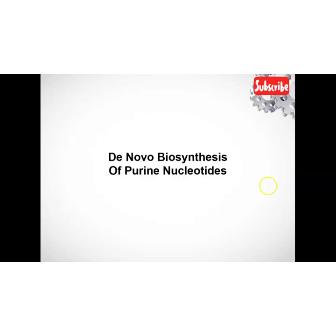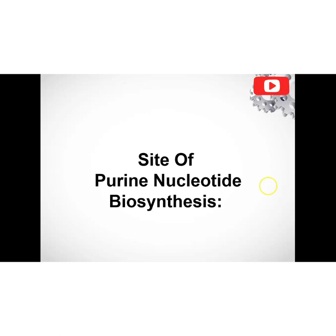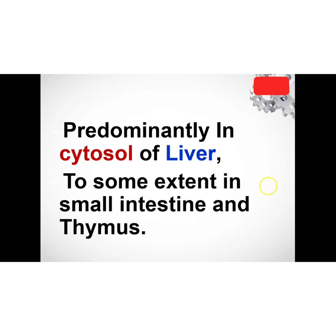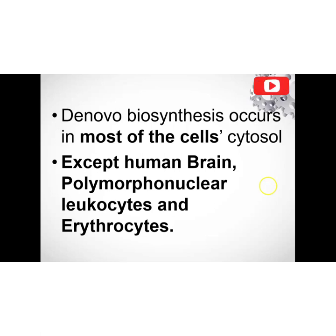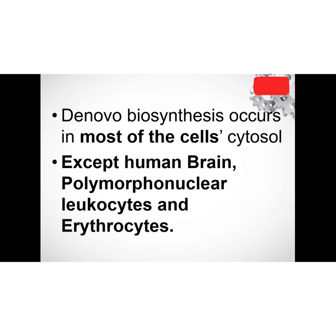The sites of de novo purine nucleoside synthesis are the cytosol of the liver, the small intestine, and the thymus. In humans, we have the necessary enzymes to synthesize purines, so we do not need an external source. However, the human brain, polymorphonuclear leukocytes, and erythrocytes — because these cells do not undergo mitotic cell division — undergo the salvage pathway to salvage any degraded nucleotides rather than performing de novo biosynthesis.